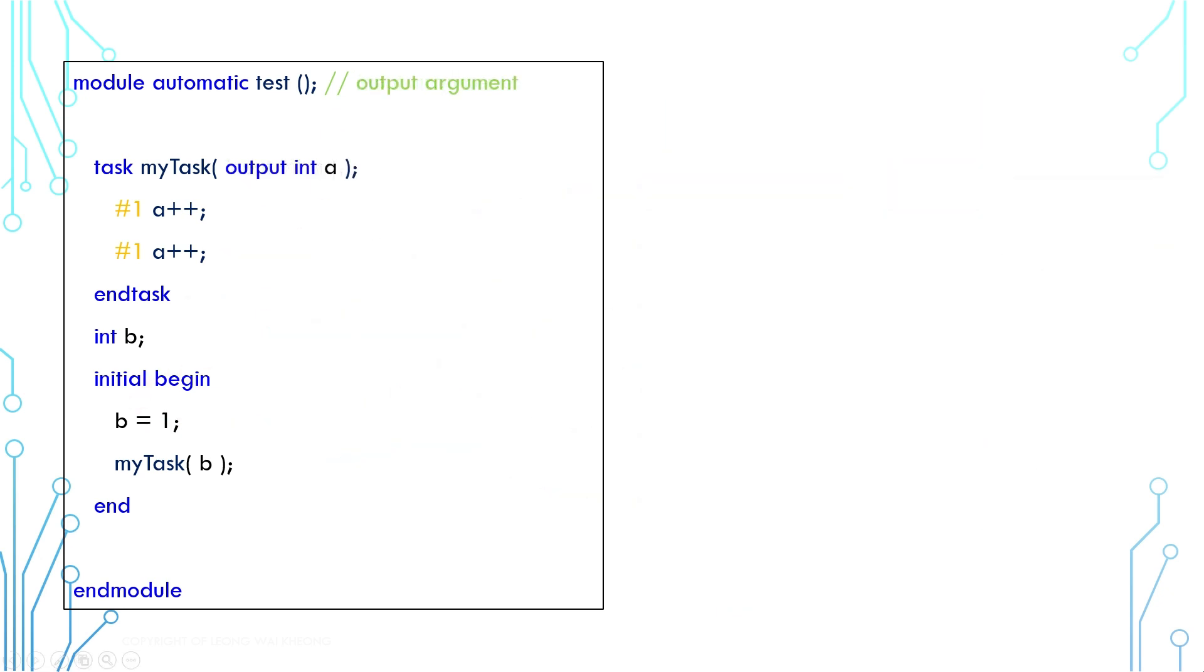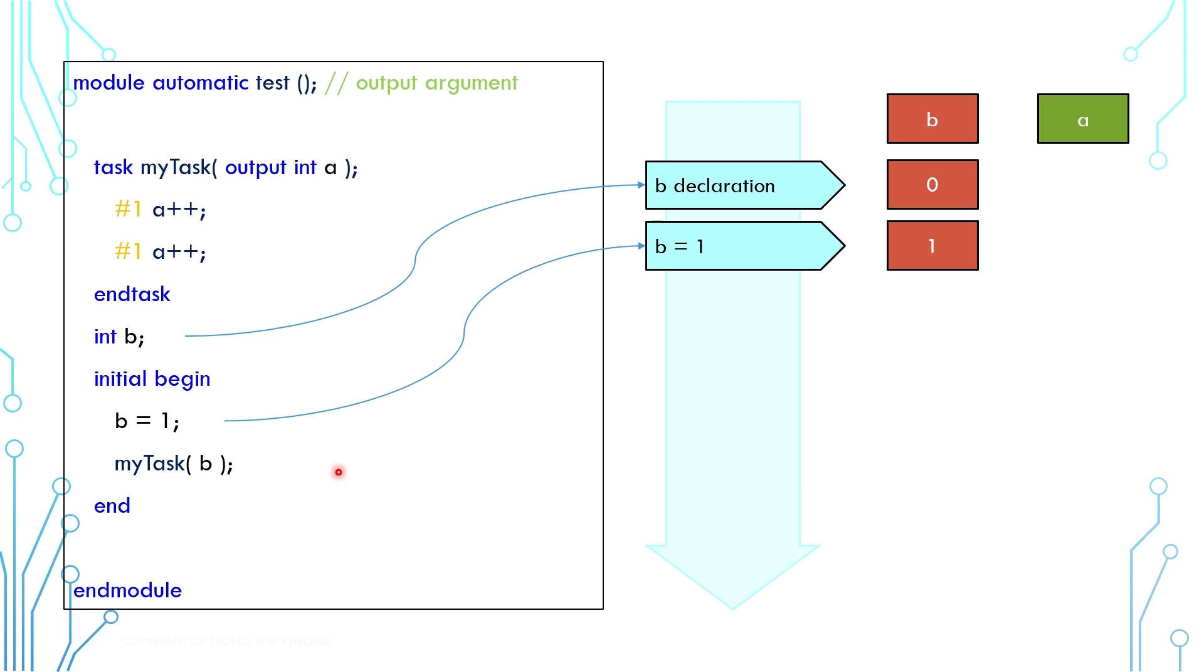Now let's move to output argument. This is the same code as before. The only difference is that the argument direction is output. The flow behavior is the same until the task is called. Similarly, A is created and its default value is 0. But because it is an output argument, it ignores the value from B and retains its default 0.